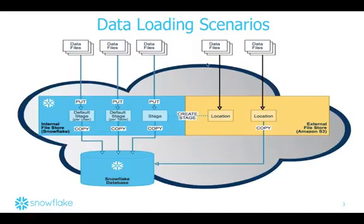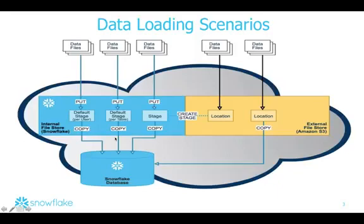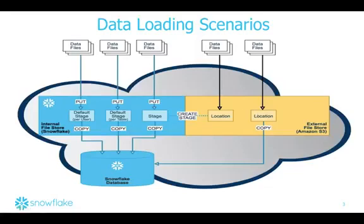Looking at this diagram of various data loading scenarios, we have data files at the top representing data that's local in your data center. Within the cloud, there's a rectangle representing S3, divided into two parts. The blue section is private S3 buckets that Snowflake maintains for customers — called a user stage. Or you can have private S3 buckets that customers manage themselves. From either of those, you can parallelize a copy into the Snowflake database.